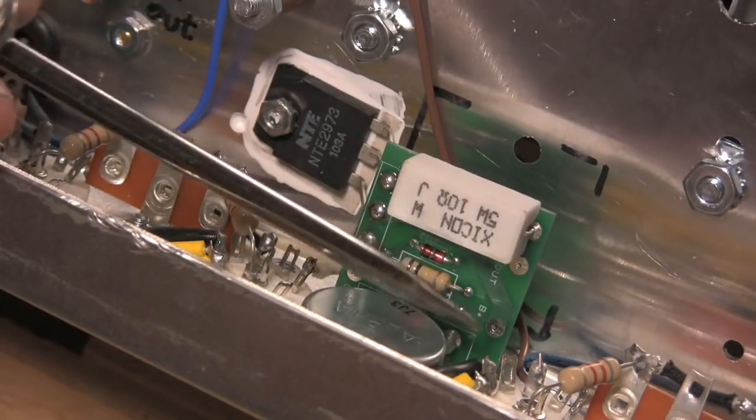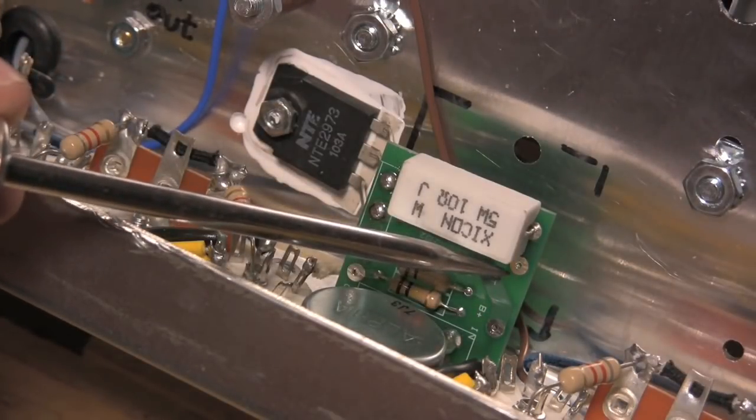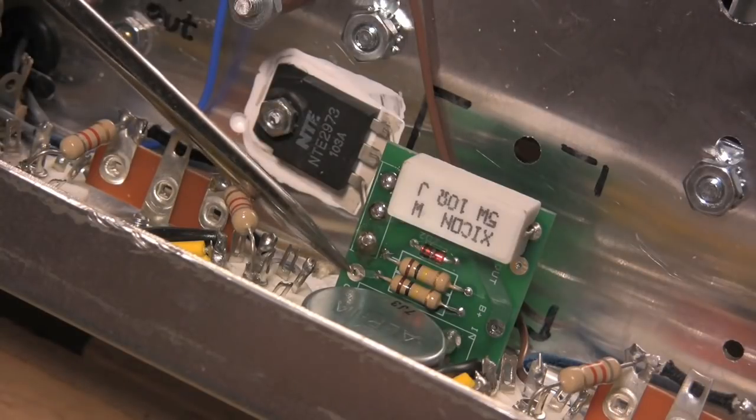The VVR's connections are B plus in, B plus out, and a ground connection. That's all.